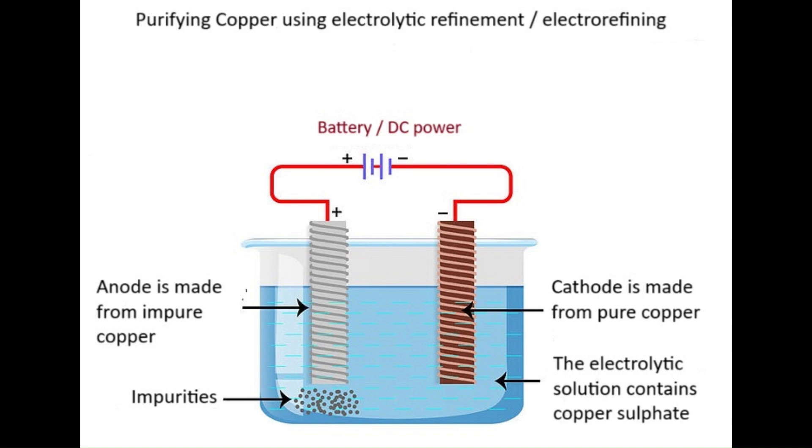When electric current passes through the electrolyte, pure metal from the anode dissolves into the electrolytic solution and gets deposited at the cathode. The insoluble impurities settle down beneath the anode and are referred to as anode mud. Soluble impurities remain in the solution.